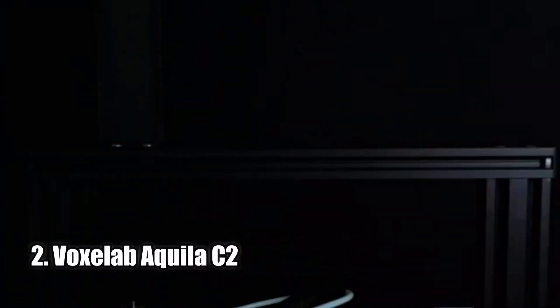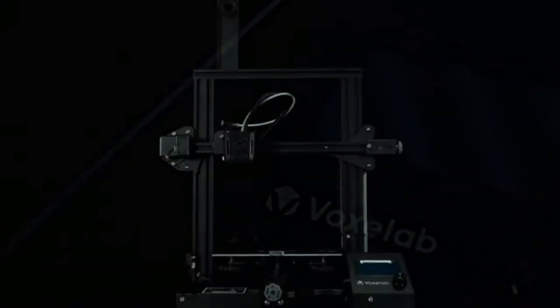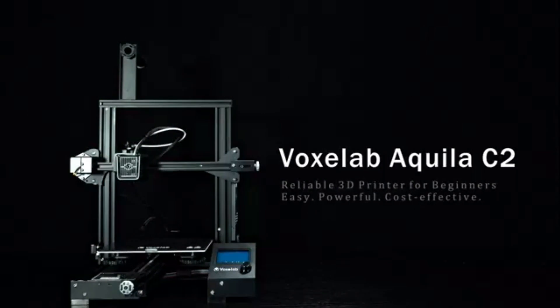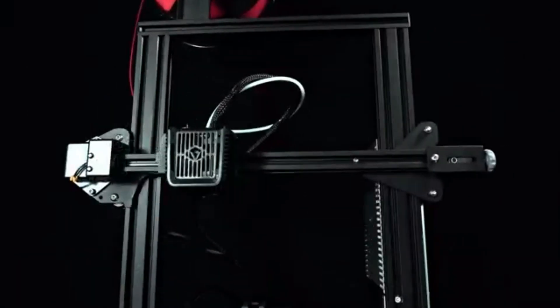VoxLab Aquila C2. The VoxLab Aquila C2 3D printer is the perfect 3D printer for anyone who wants to get the most out of their 3D printing experience. It has an improved alloy frame structure, a UL-certified power supply, a removable build surface plate, and full open-source and resume printing functions.